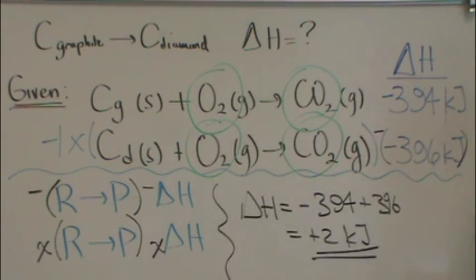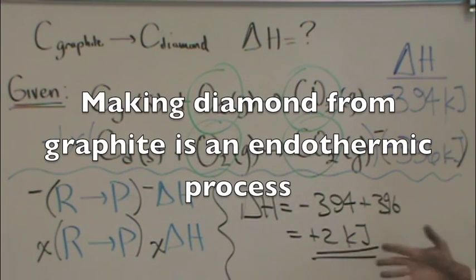So you're going to notice one last thing. Whenever I add two reactions, the delta H's of those add after you factor in the multiplier. So those delta H's add, and I get this. So this means that this reaction is, since it's positive, is endothermic in order to create diamond from graphite.